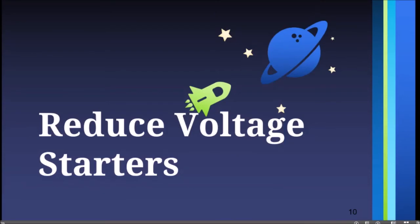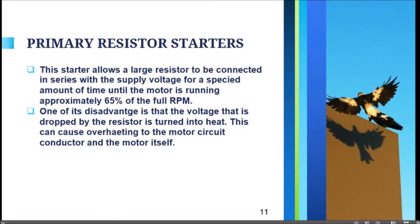The primary resistor starter allows a large resistor to be connected in series with the supply voltage for a specified amount of time until the motor is running at approximately 65 percent of full RPM. When the motor is starting, the primary resistors engage; after the motor reaches 65 percent of its full RPM, they disengage.